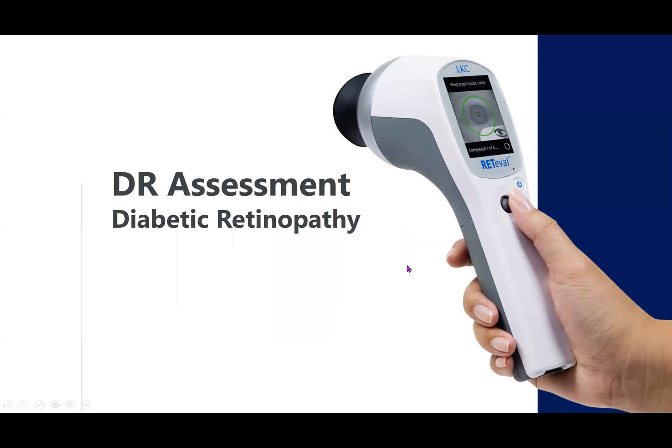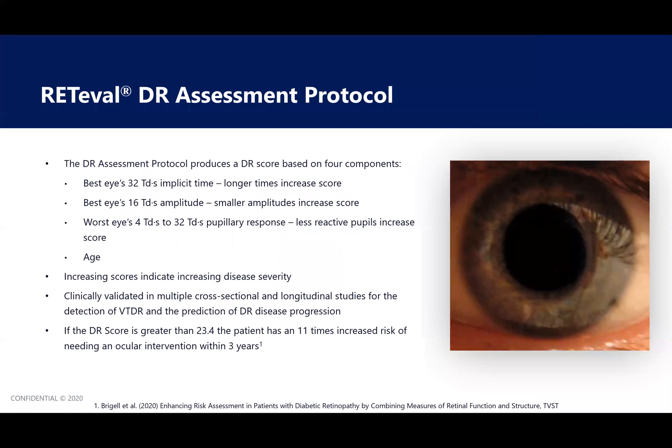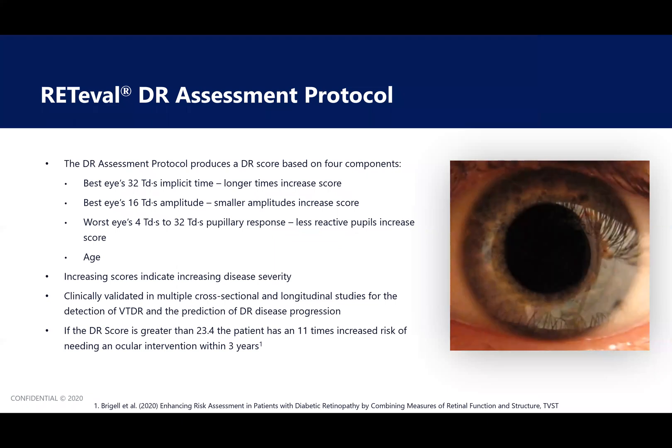The first test I'm going to review is the DR assessment, which is used for diabetic retinopathy. The DR assessment protocol produces a DR score based on four components. First, the best eye's 32-troland implicit time, longer times increase the DR score. Second, the best eye's 16-troland amplitude, smaller amplitudes increase the DR score. Third, the worst eye's 4-troland to 32-troland pupillary response, less reactive pupils increase the DR score, and the patient's age. Increasing scores indicate increasing disease severity. This DR assessment has been clinically validated in multiple cross-sectional and longitudinal studies for the detection of vision-threatening diabetic retinopathy and the prediction of diabetic retinopathy disease progression.